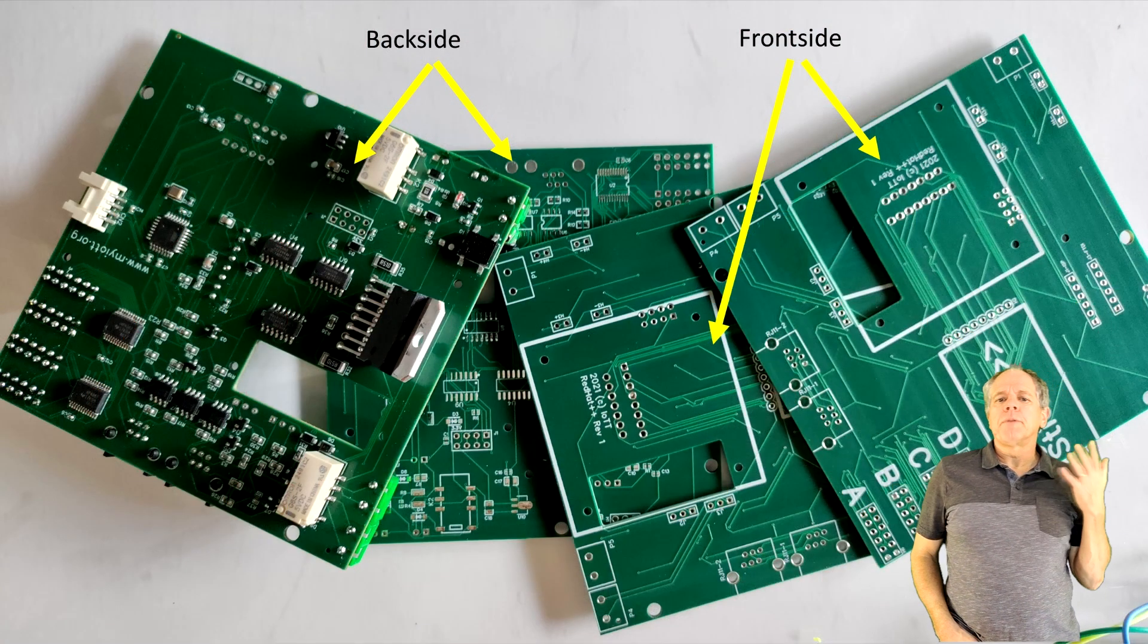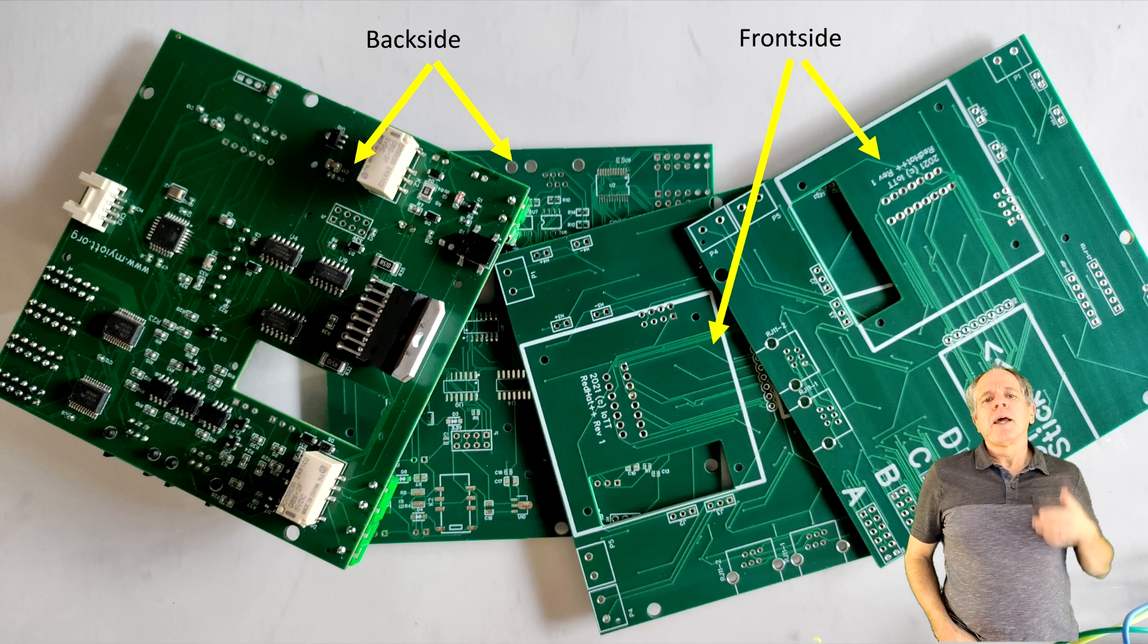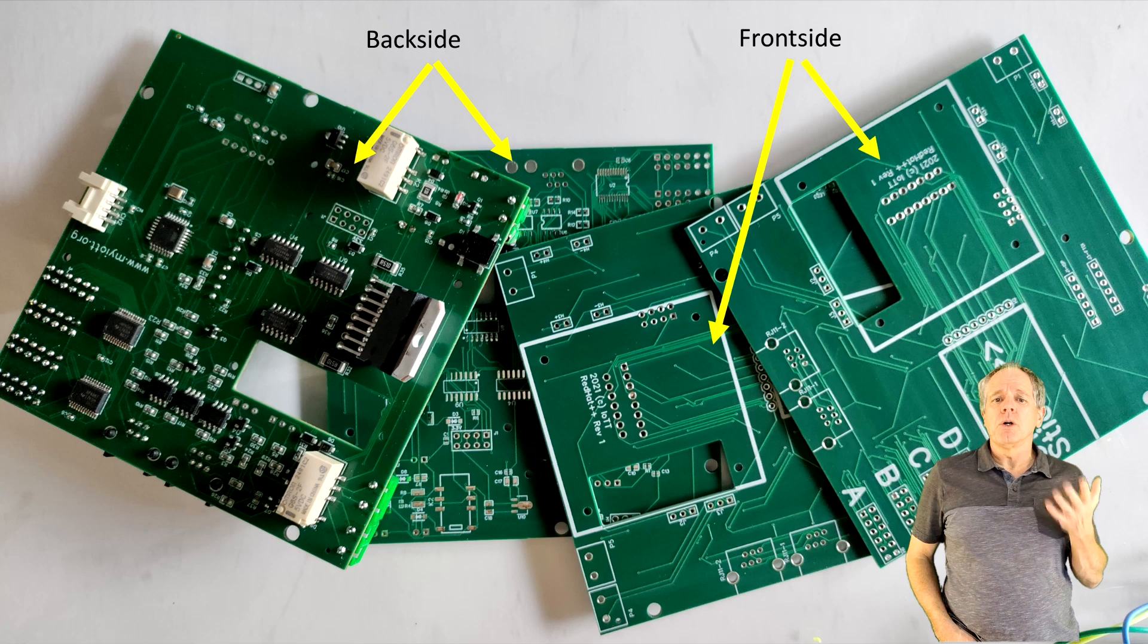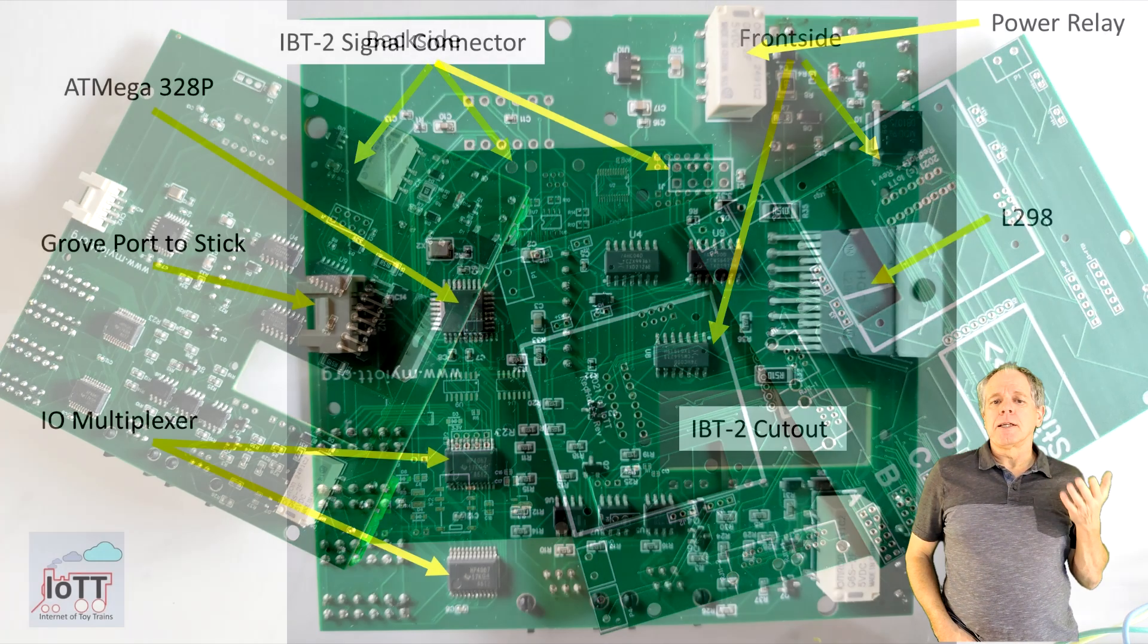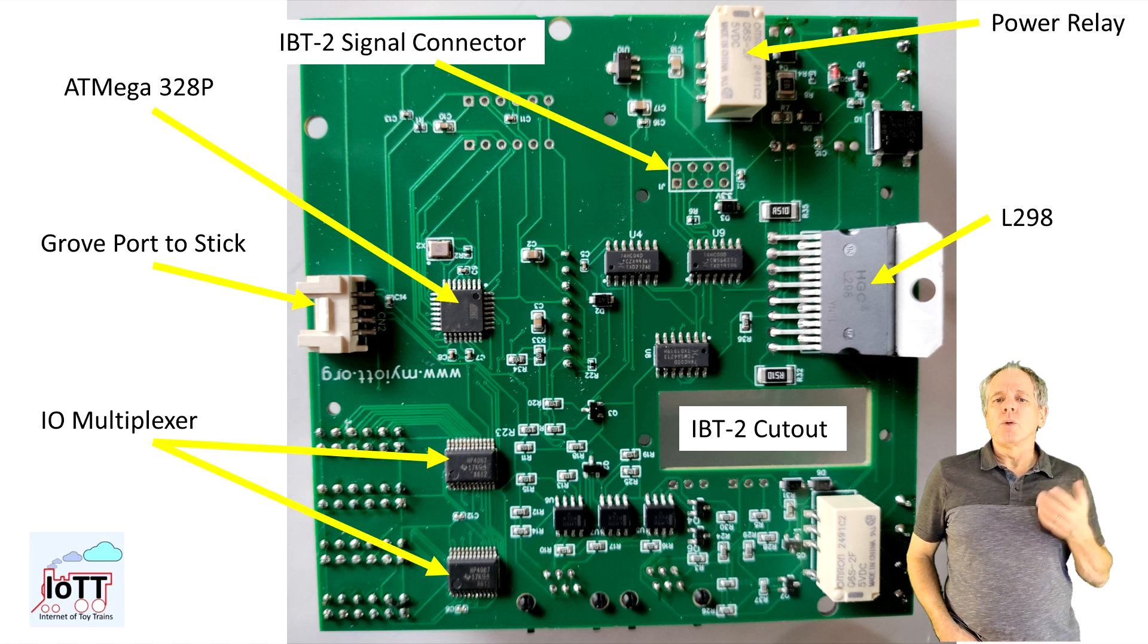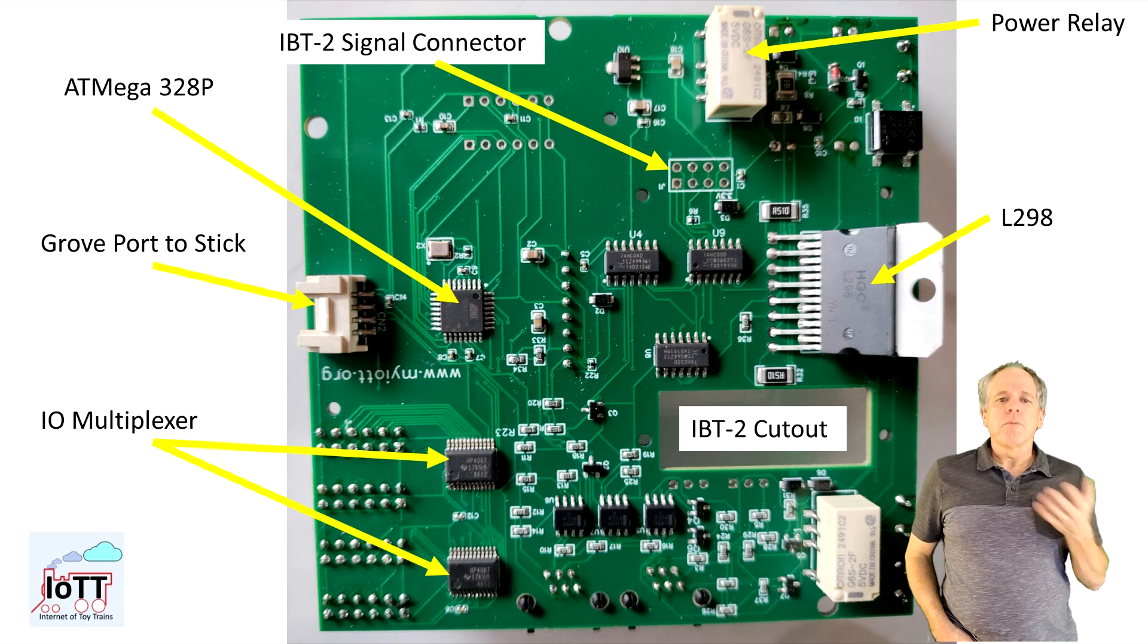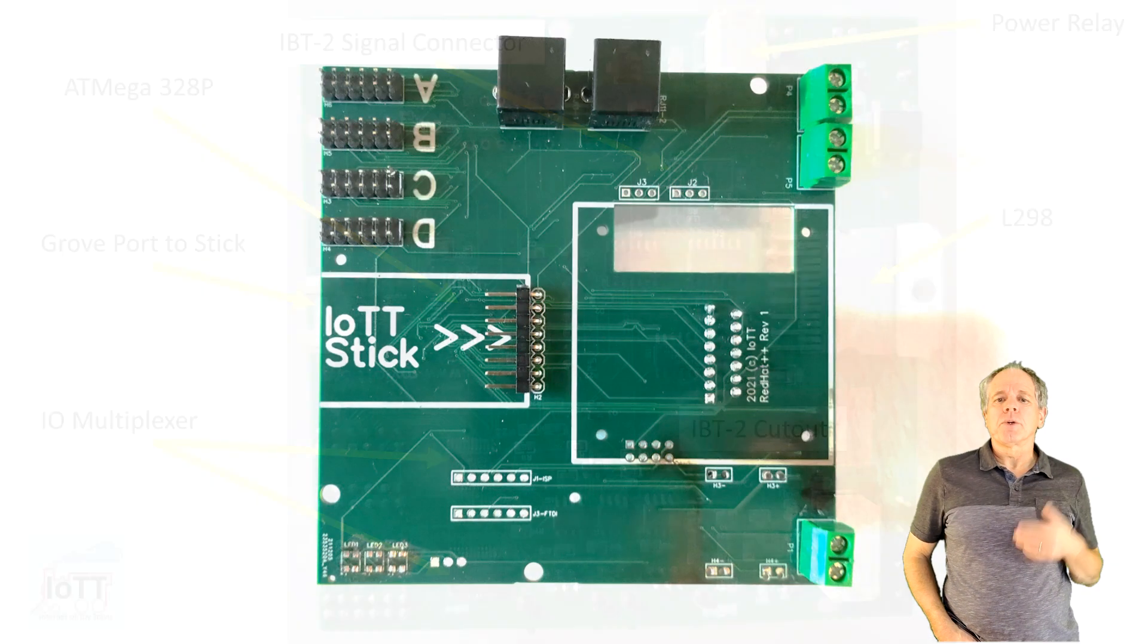As I normally do when prototyping a new board, I ordered a small series of 5 PCB boards with two of them assembled on one side. In my case, that is the lower side of the board with all the electronic components. I then first installed all the components on the top side of the board.